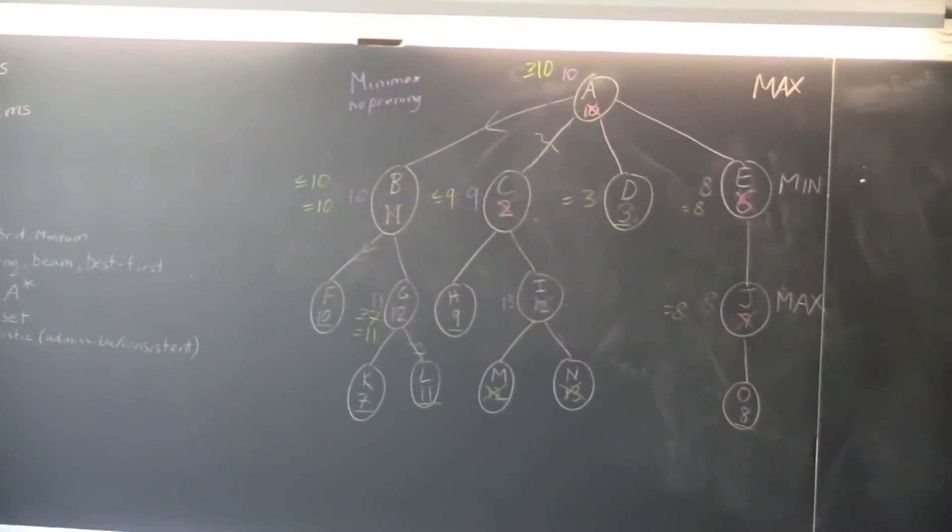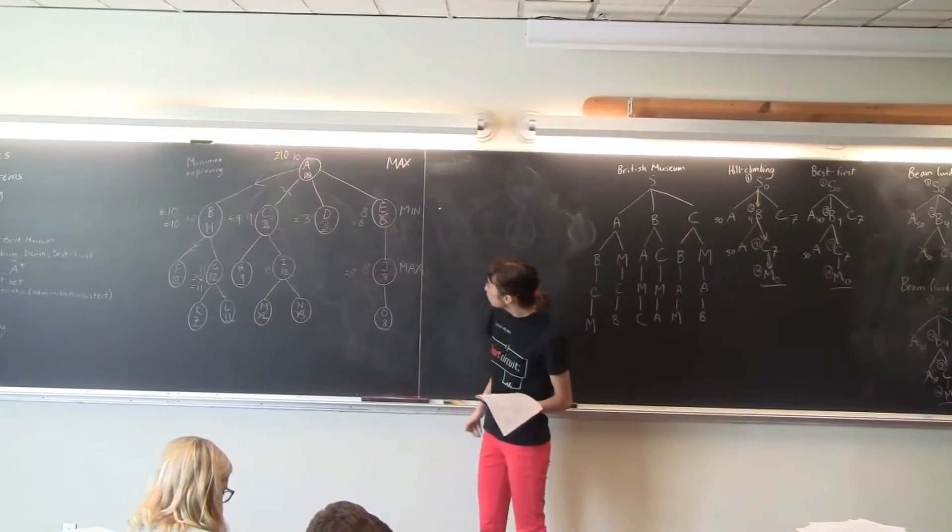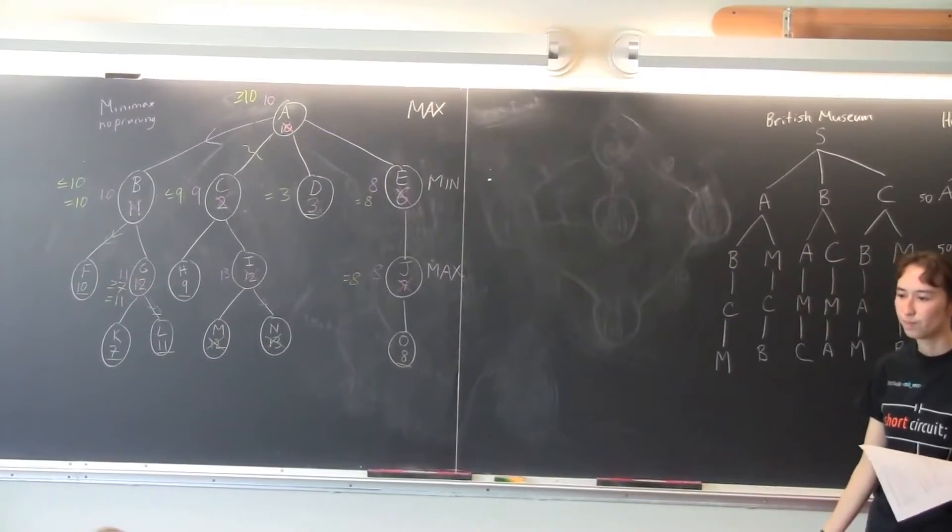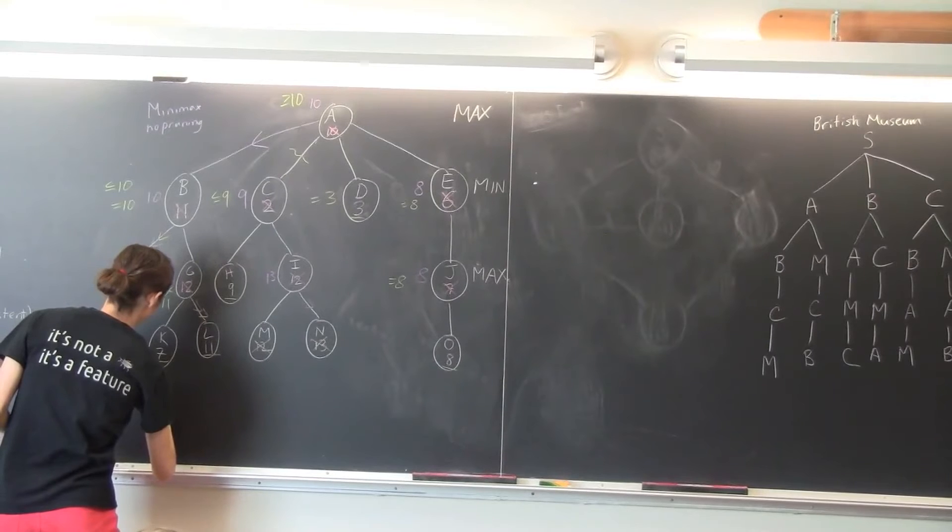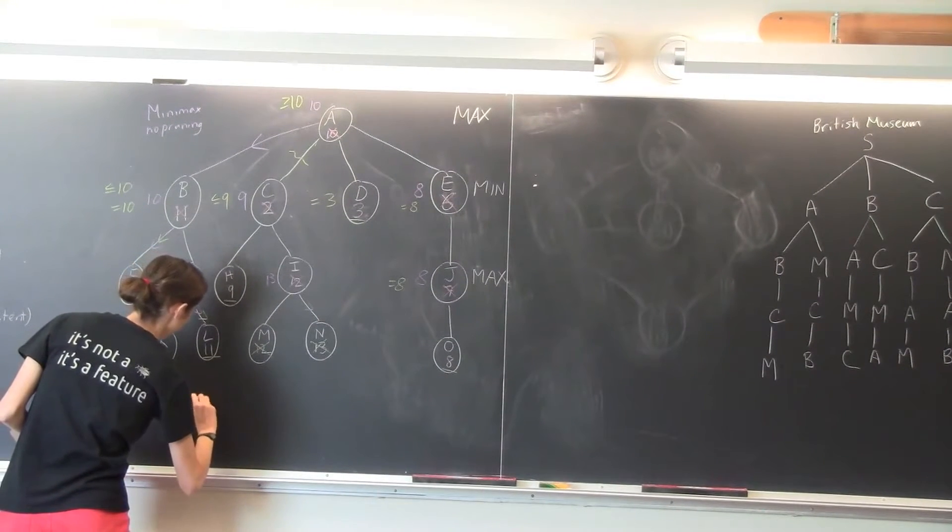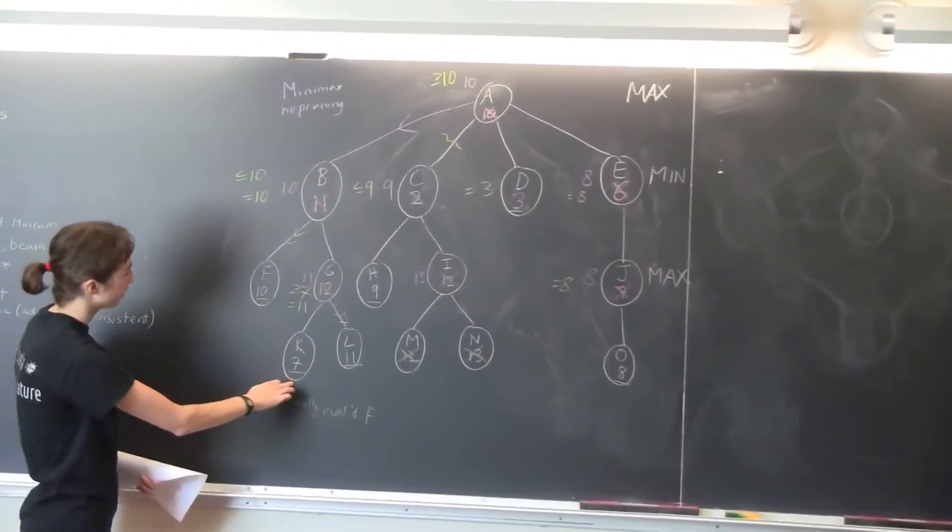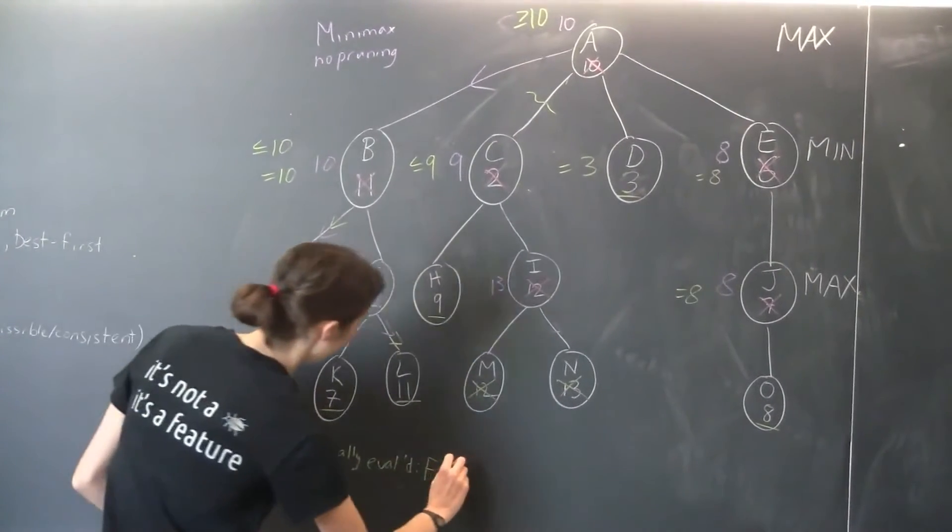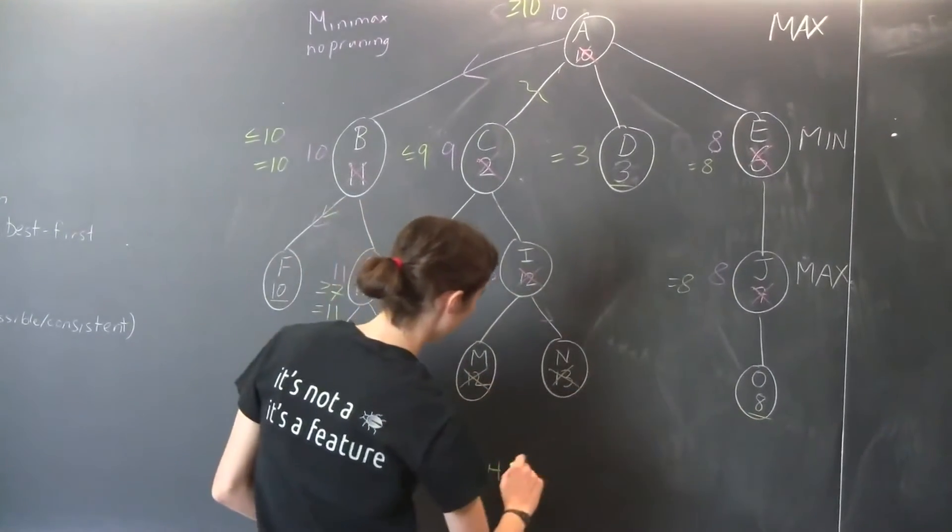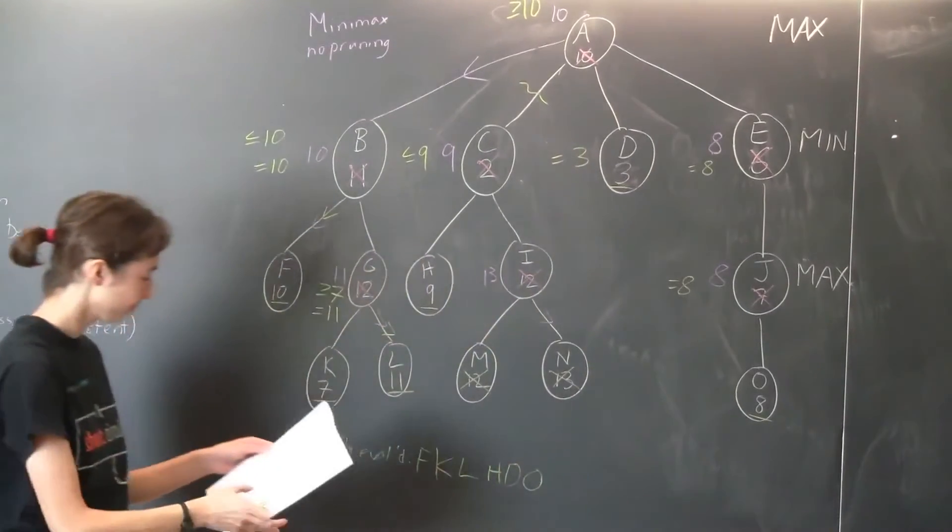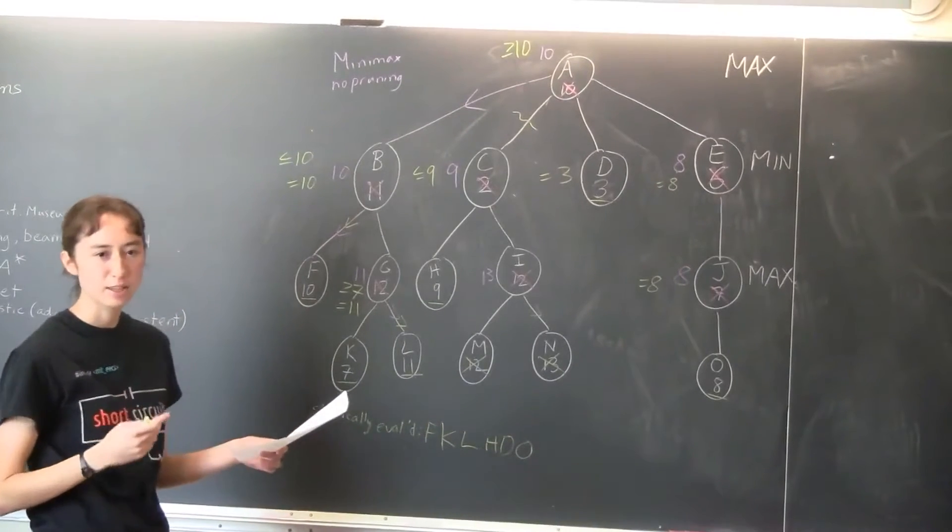So now if we look at the other questions on this page, it says, list the nodes you statically evaluated in the order you evaluated them. So which nodes did we statically evaluate? Yeah, F is the first one that we statically evaluated. So if we're listing those nodes, we're going to start with F. And because we kept track of which ones we evaluated, we can just read them off in order from left to right. So we get F, K, L, H, D, and O. And which move does Max choose? B, yeah. And you'd get the same answer from Minimax.